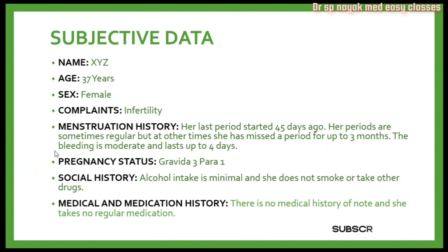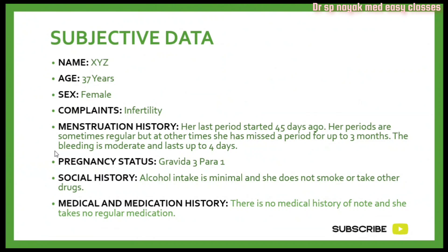Her pregnancy status is gravida 3 and para 1. Gravida, also known as gravidity, is the total number of confirmed pregnancies a female has had regardless of outcome. Para, also known as parity, is the number of live births after 20 weeks of gestation. Since this patient has a daughter, her para is 1, and she had 2 miscarriages, making her gravida 3.